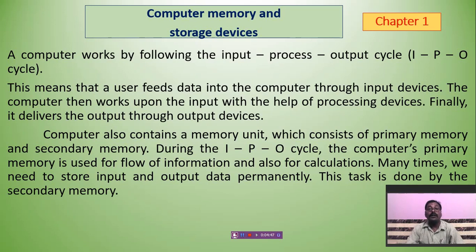The computer also contains a memory unit which consists of primary memory and secondary memory. Inside your CPU box there are two types of memory — primary and secondary. Memory is a power to remember something. When you learn for exams, your question answers and all things are stored in the memory of your brain, and the next day you write those things on paper. During the IPO cycle, the computer's primary memory is used for the flow of information and also for calculation.